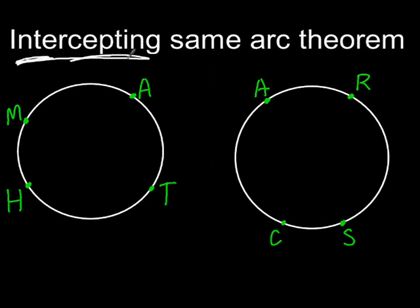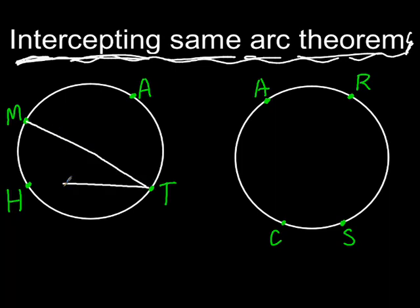Okay, let's take some more examples. What if we had the intercepting same arc theorem? We're making up this theorem because the book doesn't make us any theorem. So let's just say that we have this angle, this is an inscribed angle here, and we have another inscribed angle. But look how it's created. Notice how we created one arc here with two different angles. I'll draw them in different colors. We have this angle here, angle MAH, and we have...